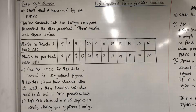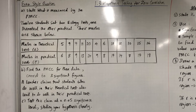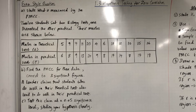Here is an exam style question. Part A: state what is measured by the PMCC. Twelve students had two biology tests — one theoretical, the other practical — and their marks are shown below. Part B: find the PMCC for these data, correct to three significant figures. PMCC can be the R or the rho. R represents the sample PMCC and rho represents the population PMCC. In this question we are given a sample, so we are trying to calculate R, the sample PMCC. You can calculate R using your Casio calculator.